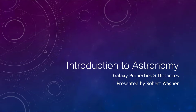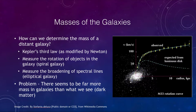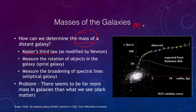First we want to look at how do we determine the masses of galaxies — how much does a galaxy weigh? One way is by using Kepler's third law as modified by Newton, which tells us that the mass is equal to the cube of the semi-major axis divided by the square of the period. So we can measure the orbits of a star around the edge of a galaxy, figure out how long it takes to go around, and that allows us to determine the mass.